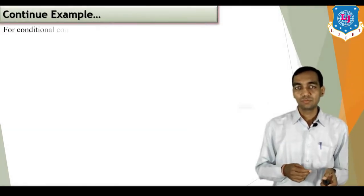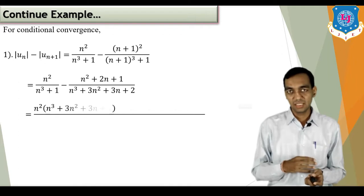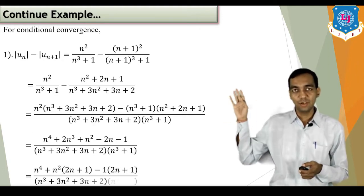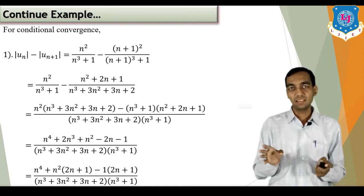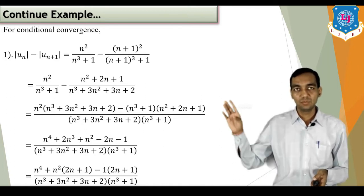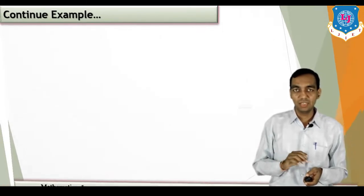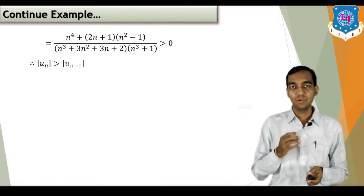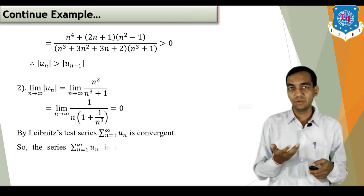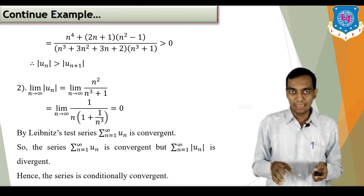To check conditional convergence, we check whether the original series is convergent. Since the original series has (-1)^n, it is an alternating series. So |u_n| = n²/(n³+1) and |u_{n+1}| = (n+1)²/((n+1)³+1). Taking the subtraction and simplifying all terms gives n⁴+2n+1 in one bracket times (n²−1), divided by (n³+3n+3n²+2) times (n³+1). This term is greater than 1 — check by putting n = 1, 2, 3 — so all terms are positive and the series is numerically decreasing.